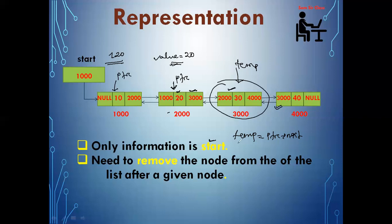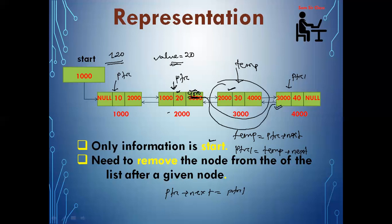When I delete node 3000, ptr->next should contain 4000, and 4000's previous should contain 2000 because of the doubly linked list. So I'll use another variable ptr1 which will point to temp->next. Since temp->next is 4000, ptr1 points to that node. Then I write ptr->next equal to ptr1, so in place of 3000 it becomes 4000.